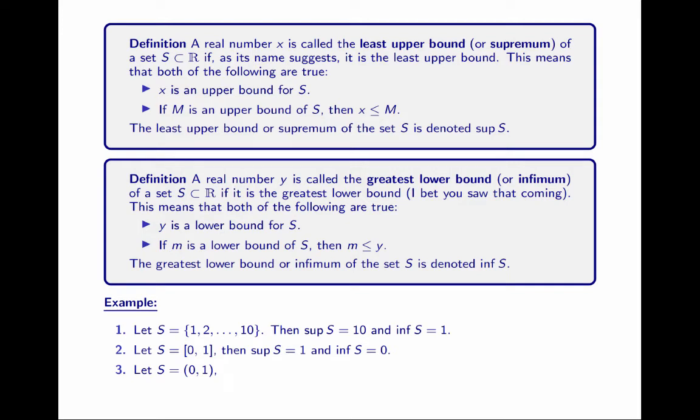Now consider the open interval 0 to 1. This set has neither a min nor a max, even though it's bounded. But we can describe the bounds by the supremum and infimum. There is no min or max, but there is a supremum. The supremum is 1 and the infimum is 0. Of all upper bounds, 1 is the least upper bound. Any number less than 1 cannot be an upper bound. Every number greater than 1 is an upper bound, but 1 is the least of them.